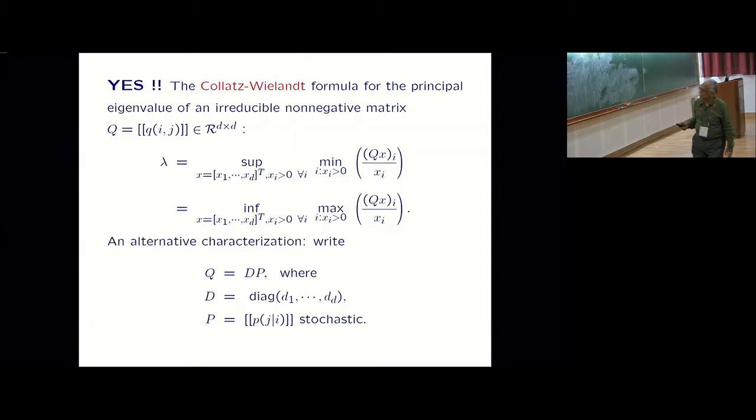There's one other characterization which came from the probability side. For that I first pull out the right Q as D times P where D is the diagonal matrix - just row sums. Divide each row of Q by the row sum and multiply and divide. Once you divide it by the row sum it becomes a probability vector, a stochastic matrix, and I have pulled out the row sums as diagonal elements.